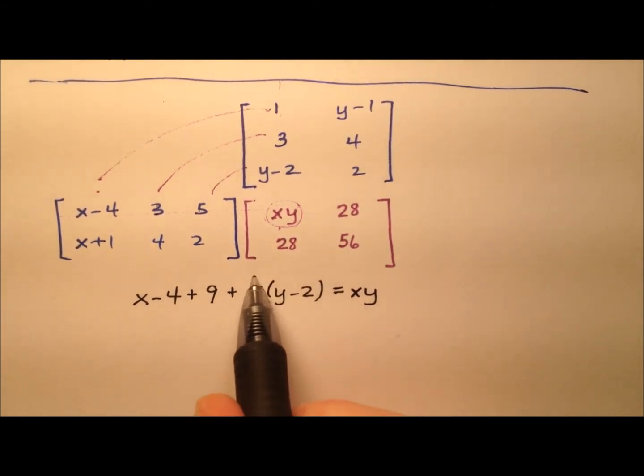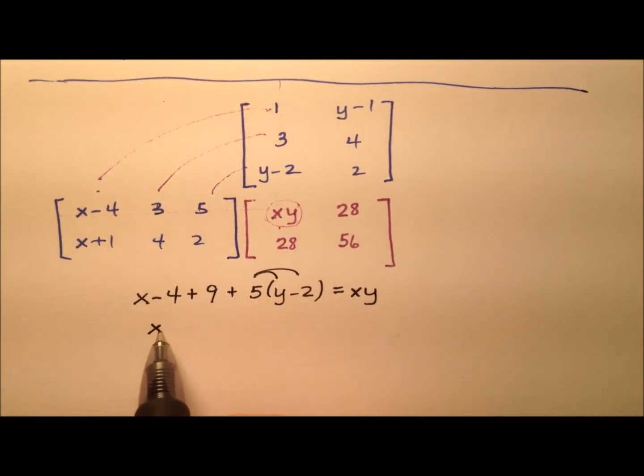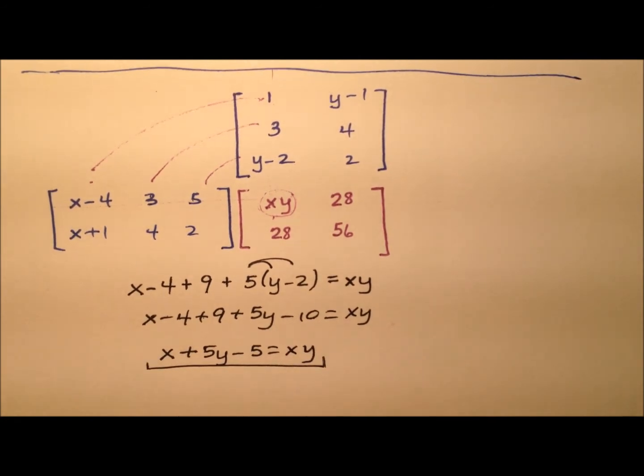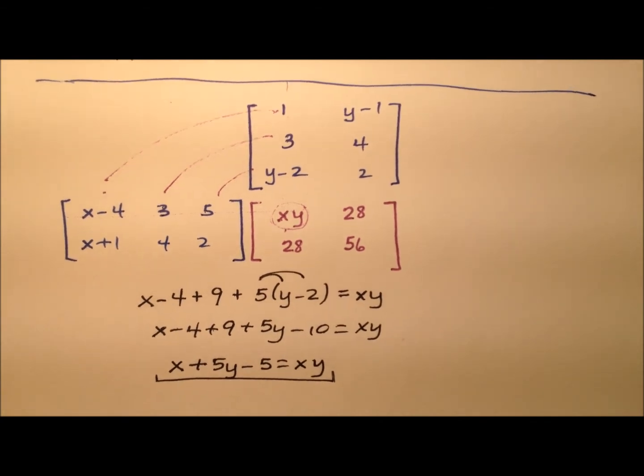So I can clean this up to begin. Let's go ahead and distribute, so x-4+9+5y-10 equals xy, and this might be a little goofy because you don't often see in these basic systems of equations the multiplication here of the xy, but -4+9 is 5, 5-10 is -5, so it looks like we have x+5y-5 equals xy. I'm just going to go ahead and underline that guy, he seems important.